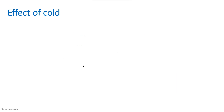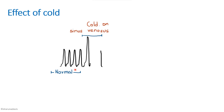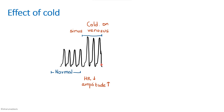Now we see the effect of cold. After depicting the normal cardiogram, we see the effect of cold on the sinus venosis. There is a decrease in heart rate and an increase in amplitude. When cold is applied to sinus venosis, the metabolic rate decreases, so impulse production decreases and the heart rate is reduced — that is the primary effect.